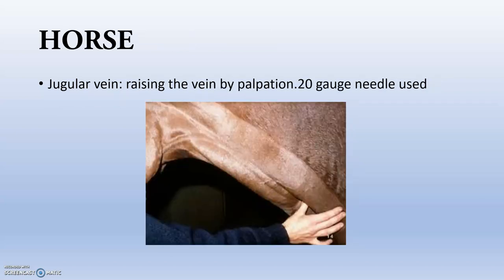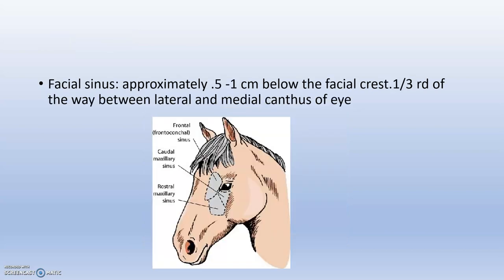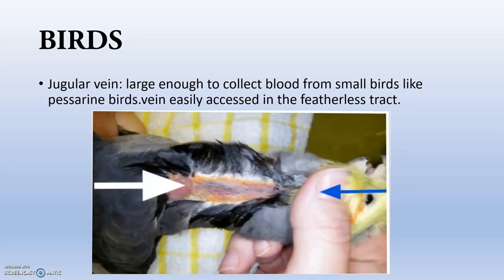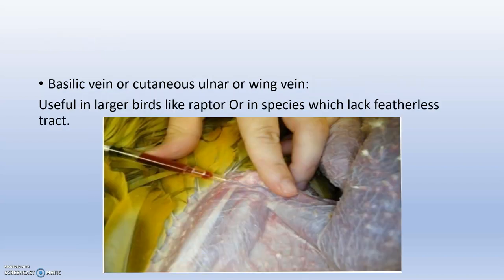In the case of horse, we also use the jugular vein. First, we should raise the vein by palpation, and you can also go for facial signs. In the case of birds, we use the jugular vein. It is large enough to collect blood from small birds and is easily accessed by the featherless tract.